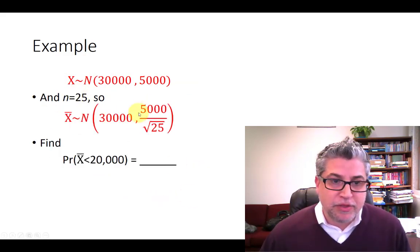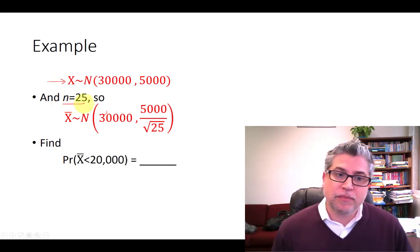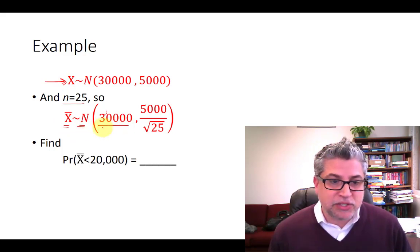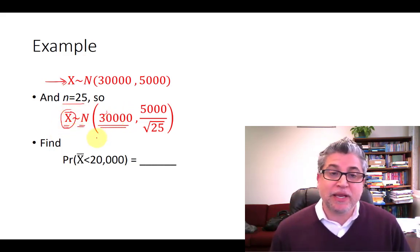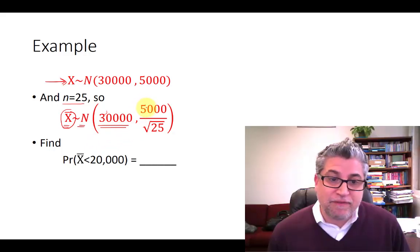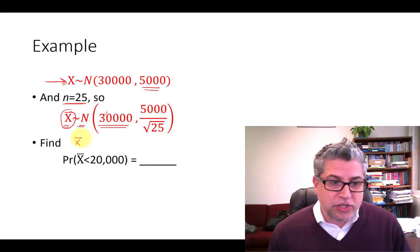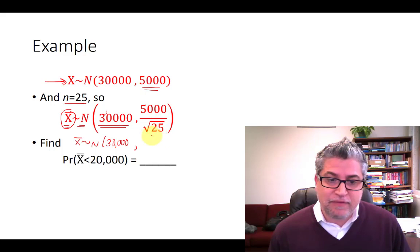So just to summarize: we have the distribution from the parent population — this is income in the US. We take a sample of size 25. The central limit theorem says, since we're sampling from a normal, the distribution of x̄ is also going to be normal. It's going to be unbiased, so I know it's going to be centered over 30,000. And the standard deviation of all the possible sample averages — the standard error — equals 5,000 divided by the square root of 25. That means the distribution of sample averages is normal with a mean of 30,000 and a standard deviation of 5,000 divided by 5, which is 1,000.